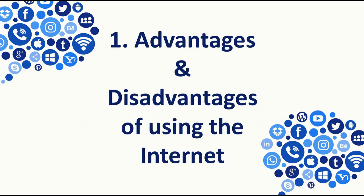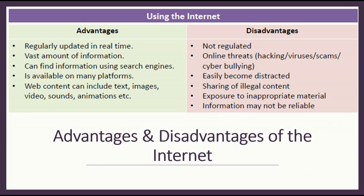Now let's think about the advantages and disadvantages of using the internet. Some advantages are that unlike searching for information in books or encyclopedias, the information on the internet is regularly updated in real time. It has a vast amount of information and you don't have to travel to a library to get it — you can search for relevant information using search engines efficiently. The internet can be accessed from many devices and is available on many platforms. It also contains different kinds of web content including text, images and video, which makes it very appealing for the user.